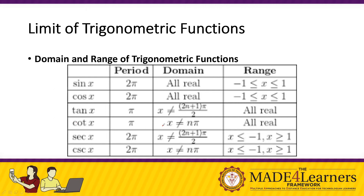Next, we have the tangent function. For tangent of x, we can observe that the period is π. This means the graph of the tangent function repeats faster compared to sine and cosine — the tangent repeats itself in the shortest possible interval. After π, it repeats again at 2π, so there are already two patterns of tangent within 2π. Unlike sine and cosine, which have only one pattern at 2π, the period is just π.